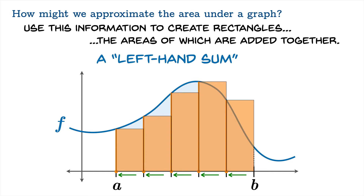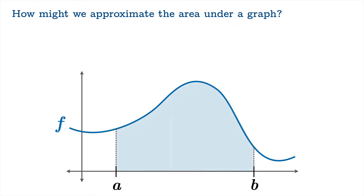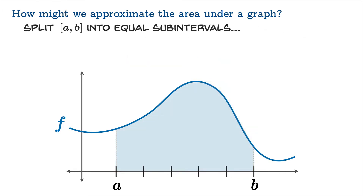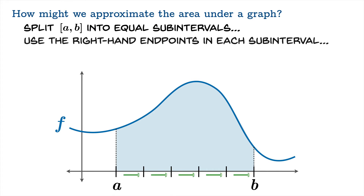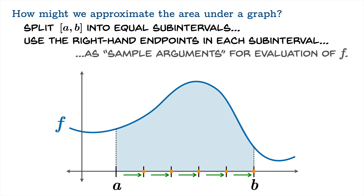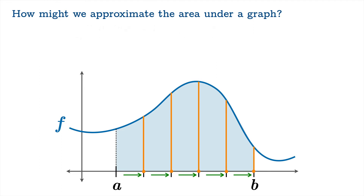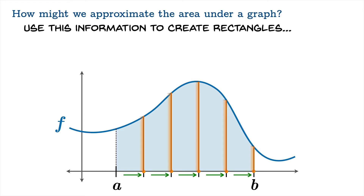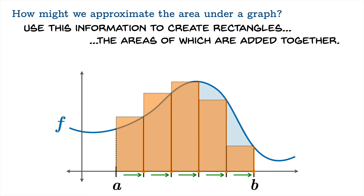A left-hand sum — in this case with five divisions. You could use any number of divisions; the rule is to chop up the interval equally into however many pieces you wish. We could also split the interval into equal sub-intervals and use right-hand endpoints. When we sample the function value at each of those endpoints, we can create rectangles using those function values as heights, and adding up these five rectangular areas gives us a number we'd call a right-hand sum.